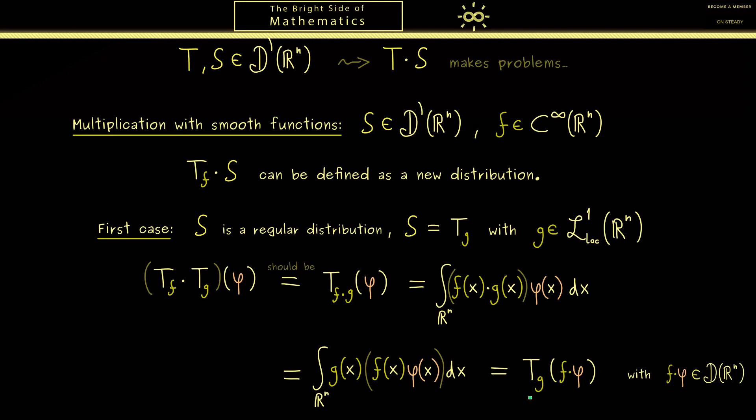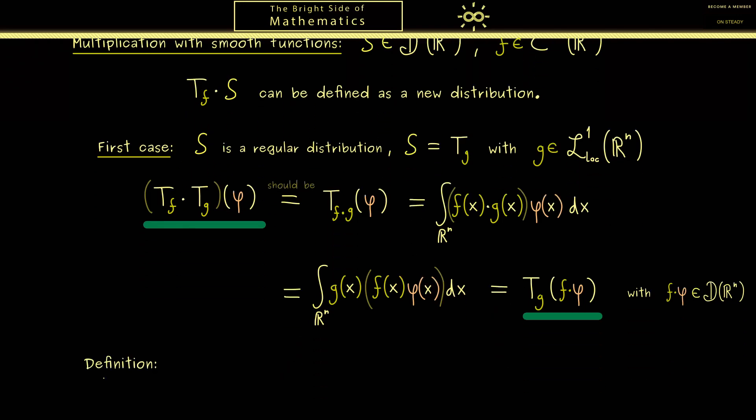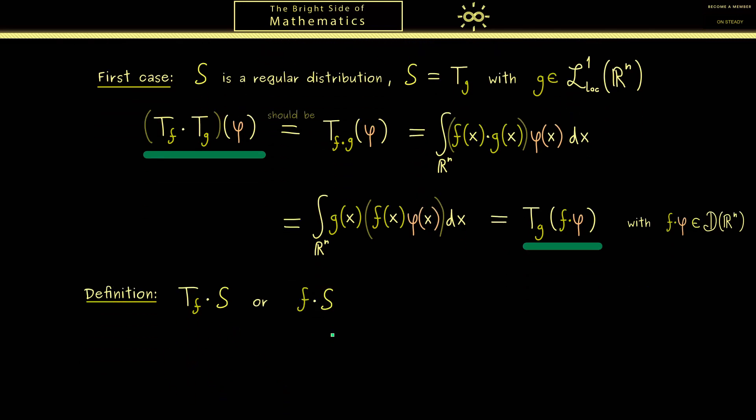OK, and then we can compare this right hand side here to the original left hand side there. And then we see the multiplication here tells us that we have to push this function f into the argument. And indeed this rule also makes sense when the distribution S is not a regular one. Hence this will be now our definition for the multiplication, in short just a natural extension of the integral representation from above. And there I can tell you often one simply writes f times S. It means the same thing because we always identify functions with distributions. However, please always keep in mind this only works for such smooth functions, simply because otherwise we wouldn't get a test function back.